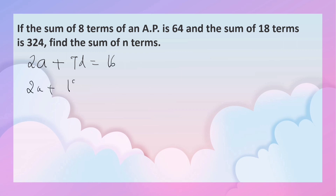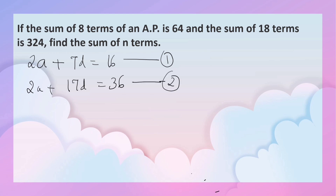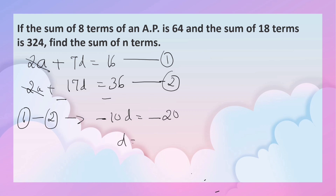So now we have equation 1: 2A plus 7D = 16, and equation 2: 2A plus 17D = 36. Subtracting equation 2 from equation 1, the 2A terms cancel, giving minus 10D = minus 20. So D equals minus 20 by minus 10, that is equal to 2.